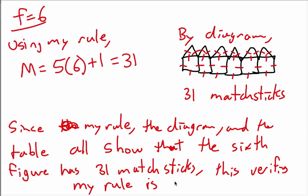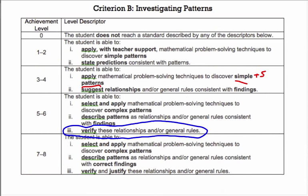An important thing to note is that verify doesn't mean it proves your rule is correct — it just provides more evidence that your rule is correct. In order to get up to an eight on the rubric, you need to both verify and justify your general rule. If you had only done one verification from a diagram already drawn, you wouldn't be able to get into the seven-eight box even if you did everything else perfectly. So you need to verify twice, and verify beyond the table.